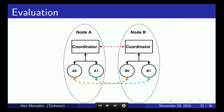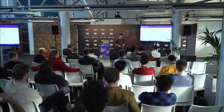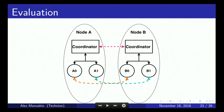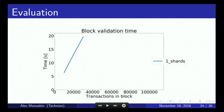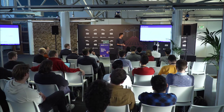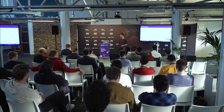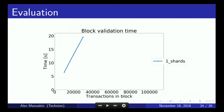In the experiment, there are two nodes talking to each other, and we change the number of shards to see if we get better performance. Starting with a single shard and single coordinator — similar to a reference client that cannot scale out — as we increase the number of transactions per block (each transaction is about 250 bytes), the time to process the block grows. We need to validate signatures and access data structures, which takes time.